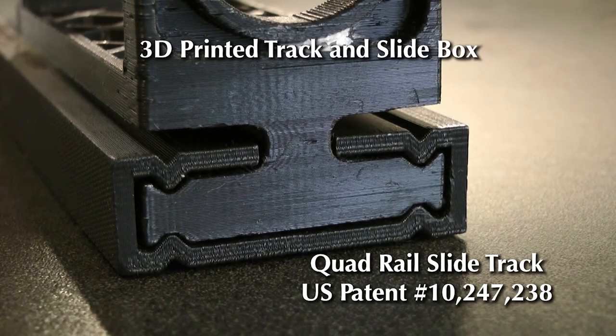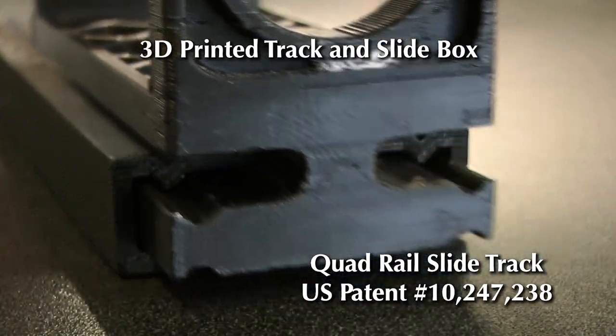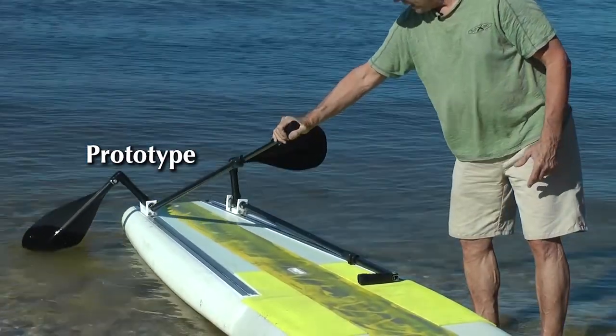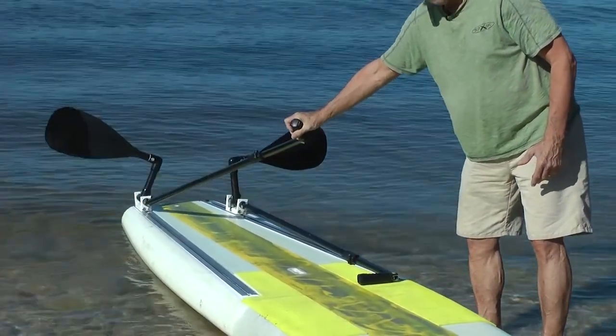The quad rail slide track was designed to eliminate the ball bearings used with the Subski prototype pole paddles in order to reduce noise and corrosion and lower the cost.